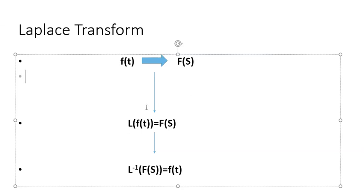We show it this way: the Laplace of f(t) equals the capital F(s). The Laplace of the time domain function f(t) will be the s-domain function F(s). We can go from the time domain to the Laplace domain, or from the Laplace domain back to the time domain. If you want to go back from the s-domain to the t-domain, we simply do an inverse Laplace: the inverse Laplace of capital F(s) will give you f(t) back in the time domain.